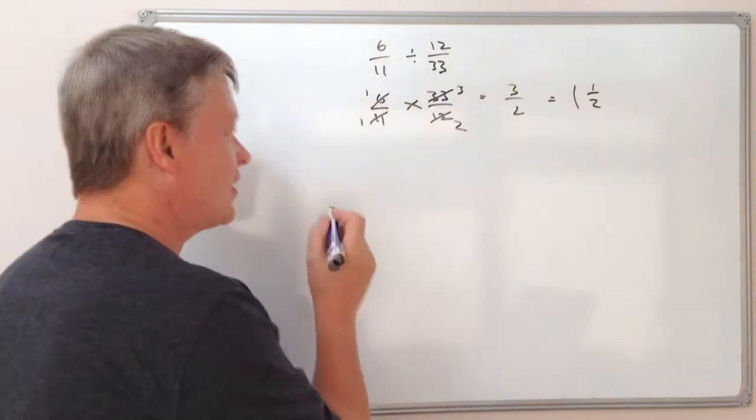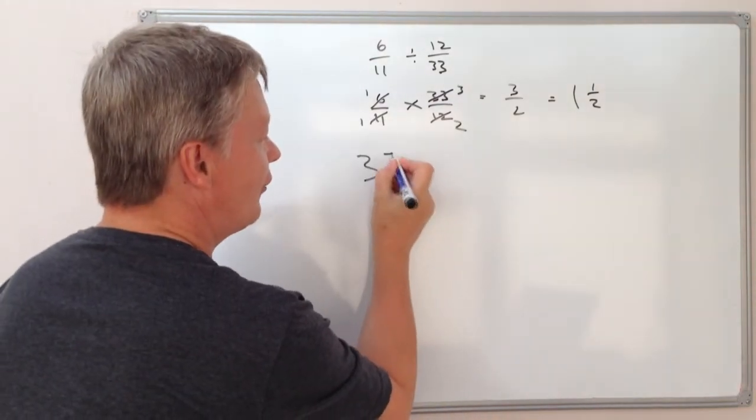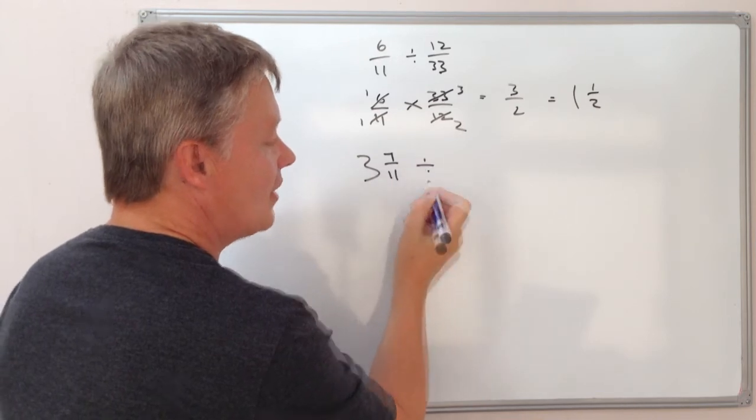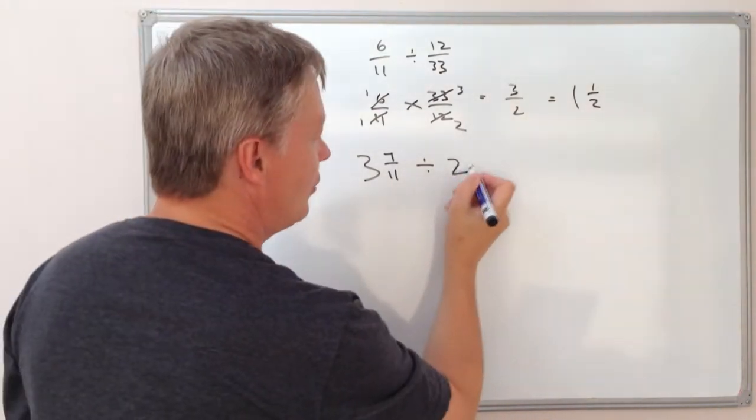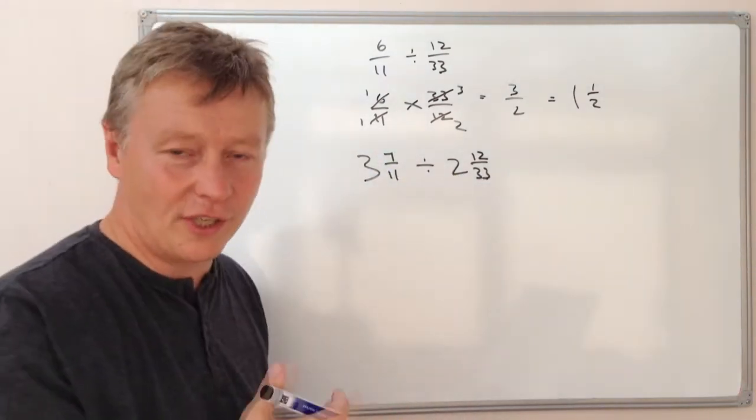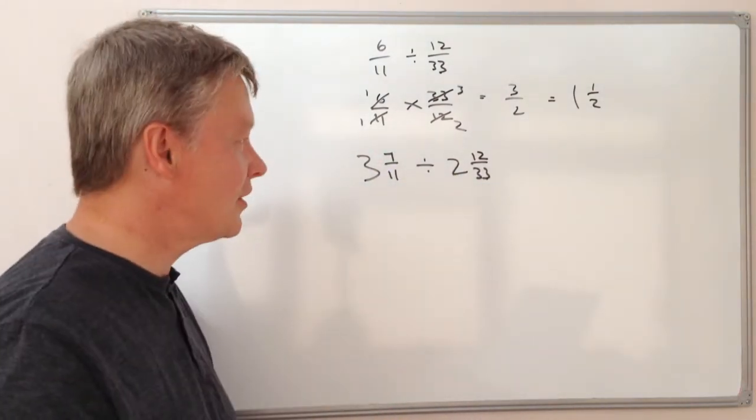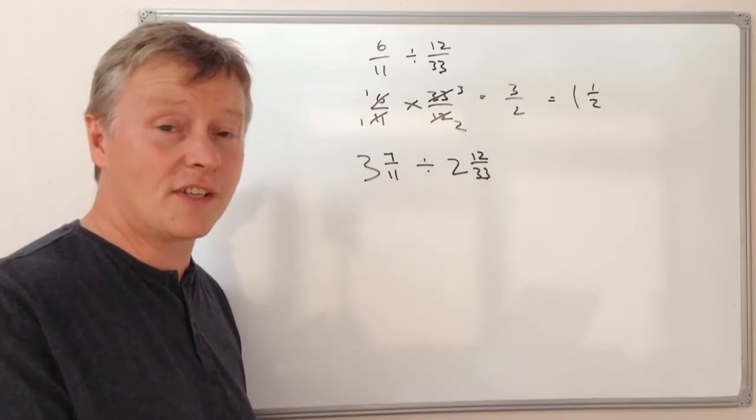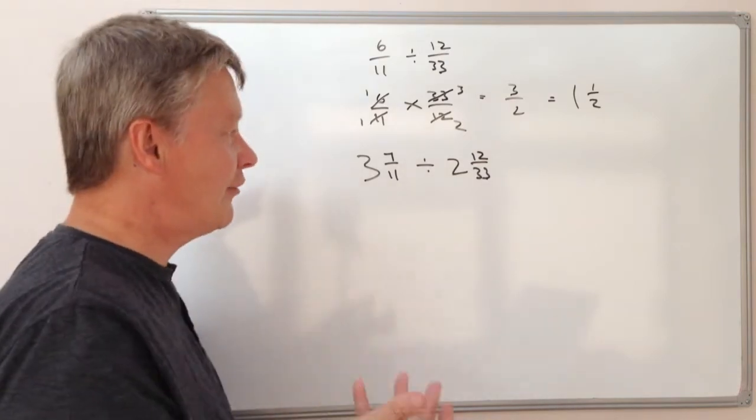So let's say we've got a question which is something like 3 and 7-elevenths and that's divided by 2 and 12 33s. Well this is probably like a GCSE or an exam based question. What we have to do is convert it again to top-heavy fractions.